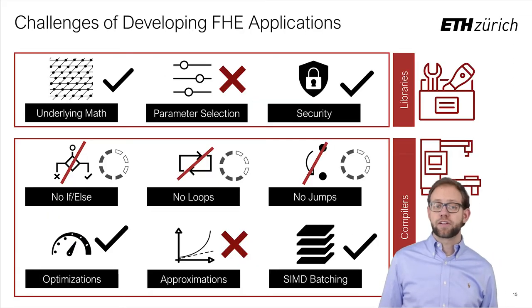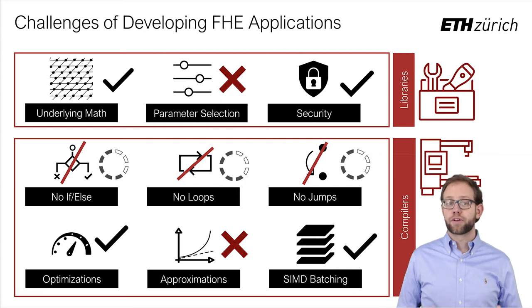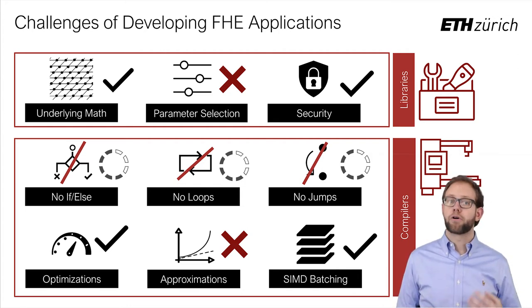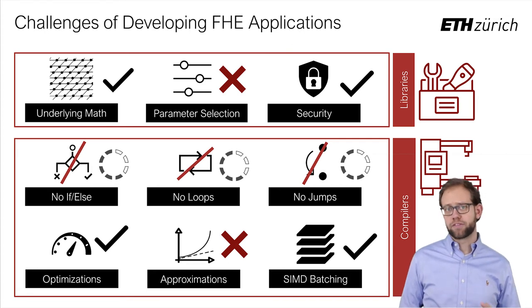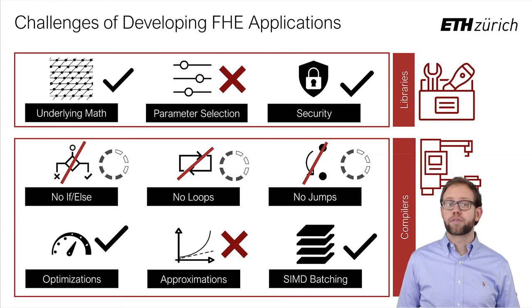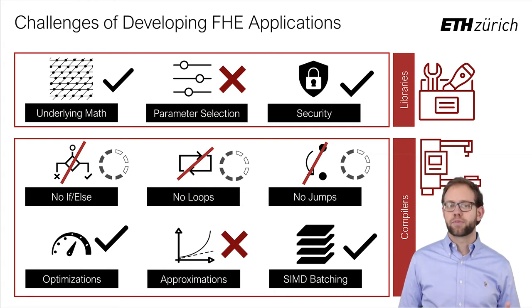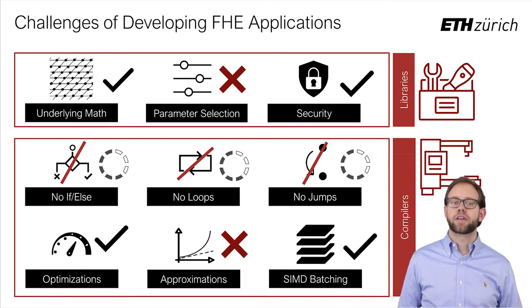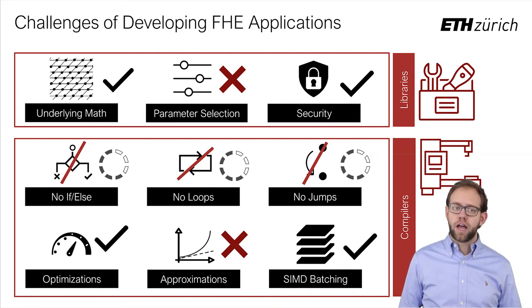As we can see, a lot of challenges remain to be solved. Libraries excel at fast and efficient implementations of the underlying FHE schemes; however, parameter selection remains an open question. Compilers meanwhile provide some assistance with the different computational model, but of course cannot completely insulate developers from these considerations. Later in our evaluation, we will see the significant impact that optimizations, approximations, and the use of SIMD batching have on performance. But first, I want to talk about how compilers actually work.